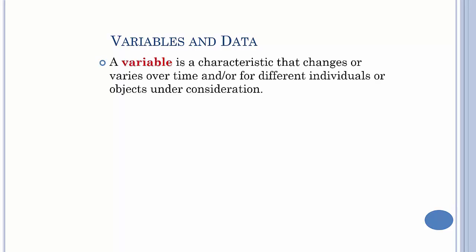Remind ourselves what a variable is. A variable is just the thing that's basically being measured. It's some characteristic, could be a number, could be a descriptor, but it's just basically something that we're measuring from different objects.